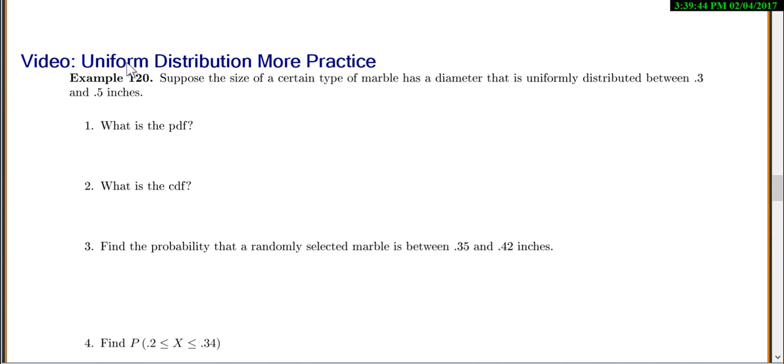In this example, we're going to talk about the uniform distribution. Suppose a size of a certain type of marble has a diameter that's uniformly distributed between 0.3 and 0.5 inches. So our diameter, we'll call x, and x is uniformly distributed, so we'll do the u, from 0.3 to 0.5.